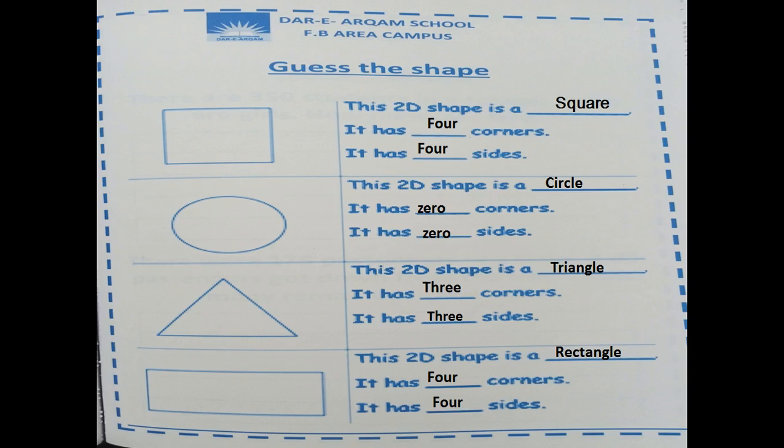Teacher has filled it for you but you have to read it with me, okay? So the first shape, which shape is this? This 2D shape is a square. It has four corners and it has four sides.